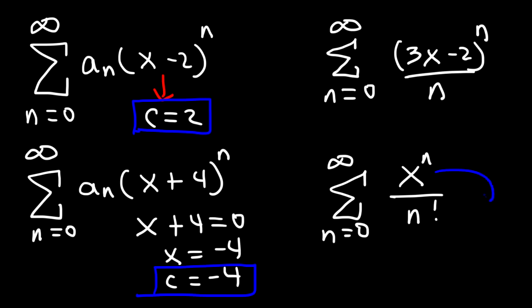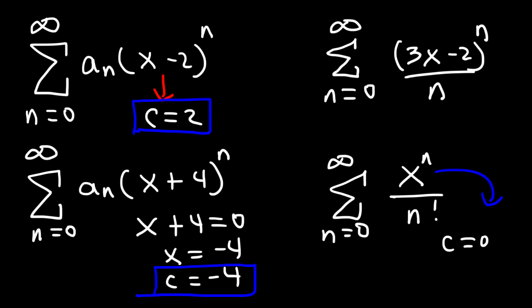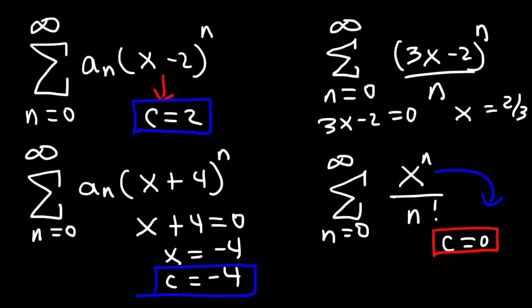If you don't see a c value and it's just x to the n, then it's centered at 0. You can write this as x minus 0 to the n, and that's the same as x to the n. For the last example, set the inside part, 3x minus 2, equal to 0 and solve for x. You should get x equals 2/3, so it's centered at that value.